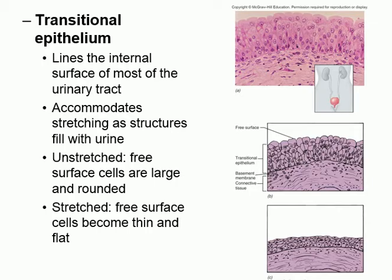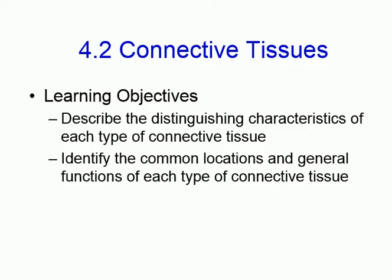There is one type called transitional epithelium. Transitional means it changes shape. The example is the urinary bladder. When the bladder is small, the wall is thick; when you store urine, it stretches, and the wall becomes thinner. The epithelium transitions between thick and thin states — that's why it's called transitional epithelium.